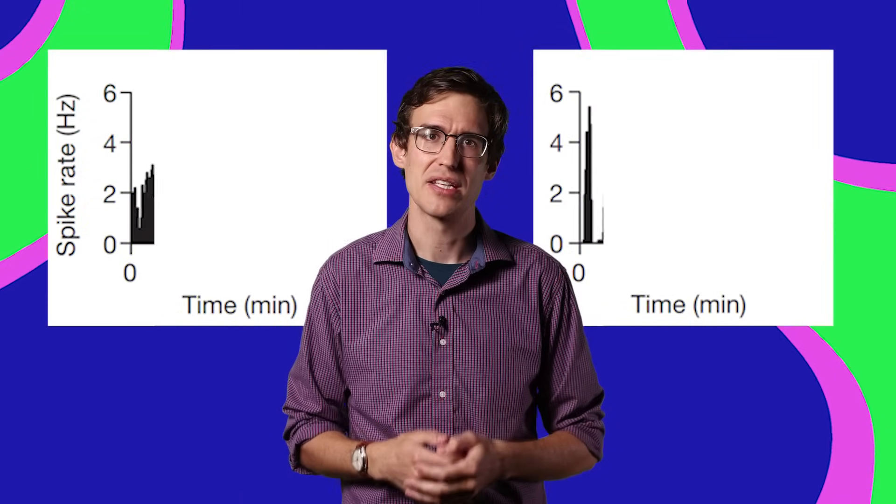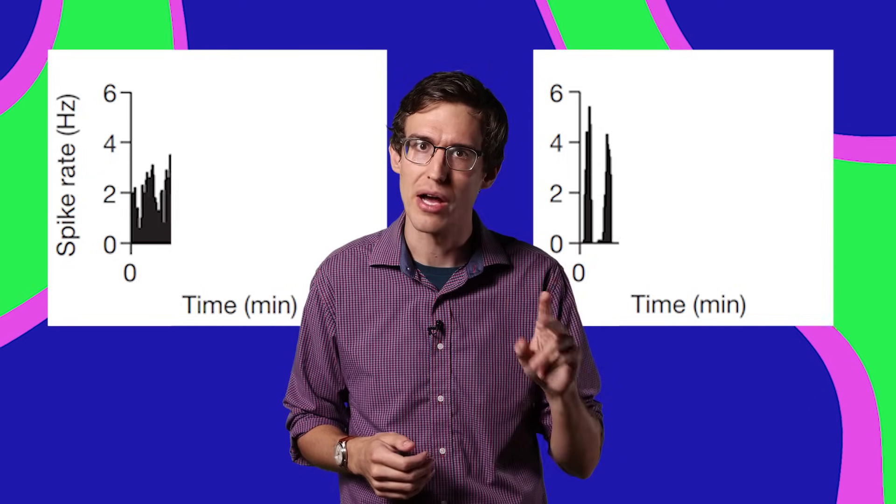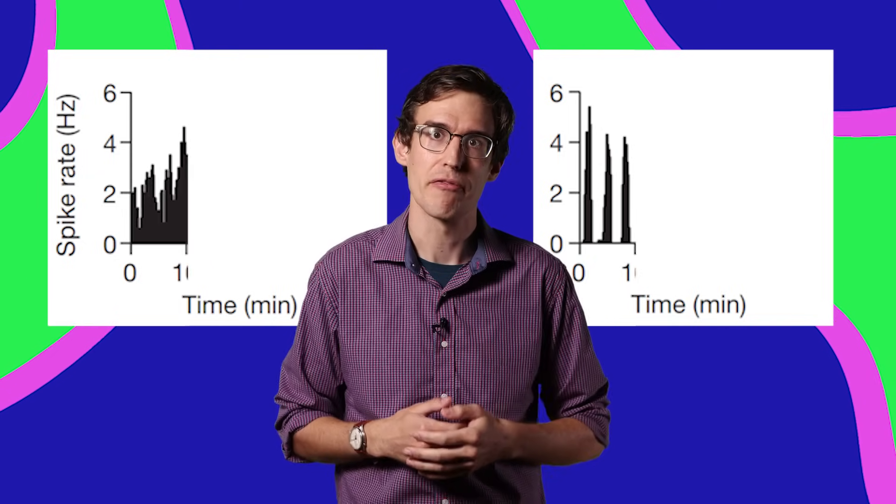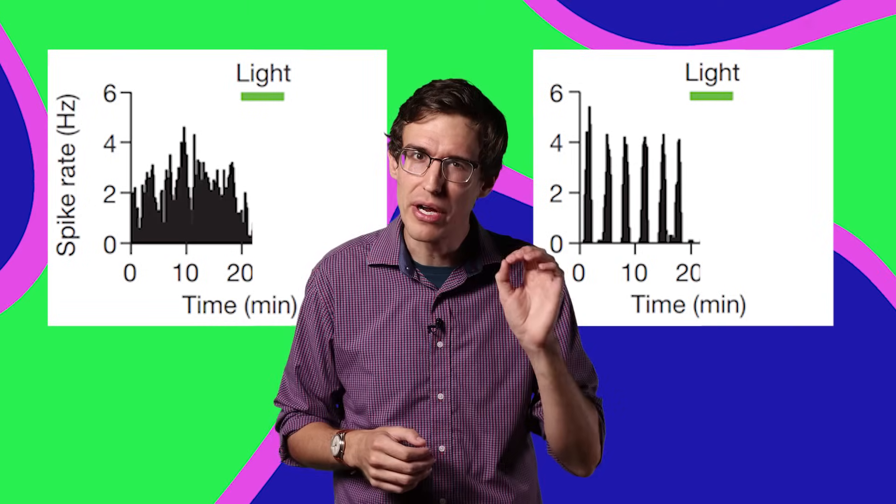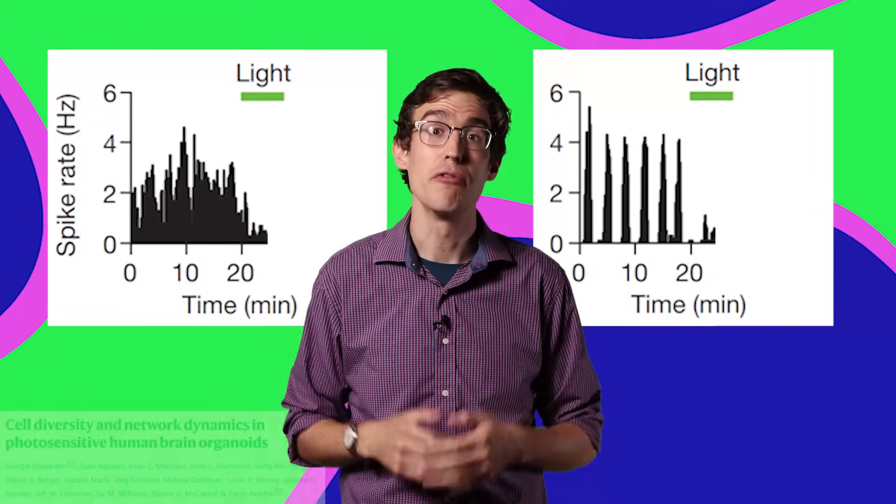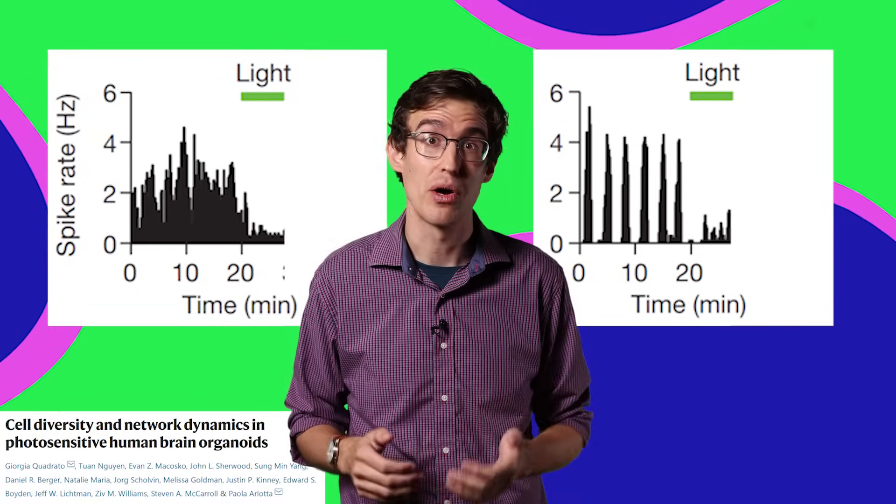Here's the baseline activity level of two different neurons in a mini-brain. They're firing electrical signals on a regular basis, either all the time or every few minutes. But if you shine a light on them, they get real quiet. That's because they grew photoreceptor cells just like the ones in your eyes.